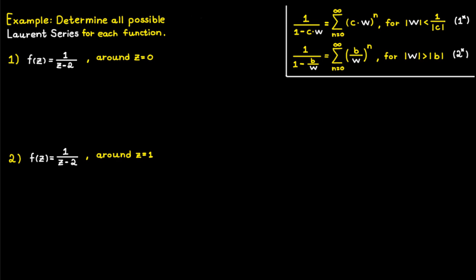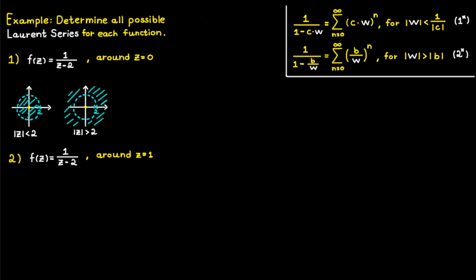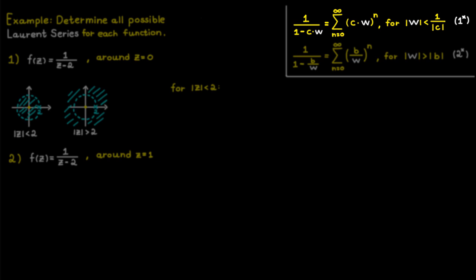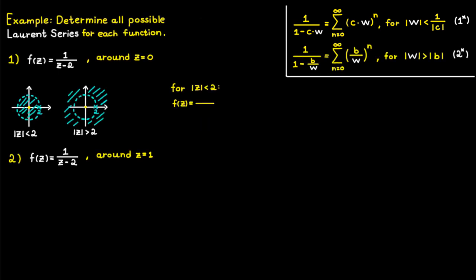For our first example, the easiest way to determine all possible Laurent series is to mark all important points on a graph. We are expanding about c equal to zero, and the function has a pole at c equal to two, so we can create two separate domains — one inside the circle and one outside — each with its own Laurent series. For the first domain, we use the first geometric series. We factor out minus one to switch the terms in the denominator, then factor out one-half to create a 1 in the denominator, and use the first geometric series with w equal to c and constant c equal to one-half.